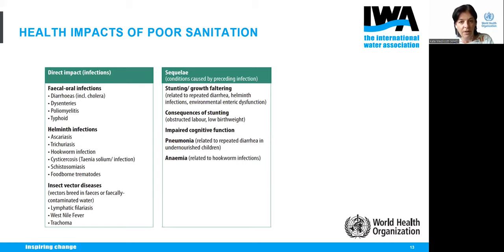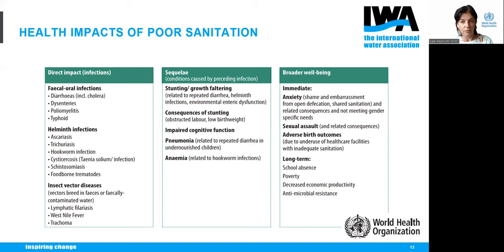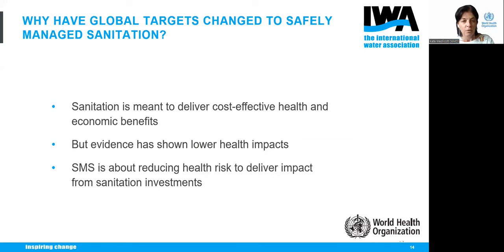The second category is consequences of those infections — things like stunting, impaired cognition, pneumonia, and anemia. And more broadly, as WHO defines health as not just the absence of disease but also broader wellbeing, we consider impacts on school attendance, anxiety, shame, and issues associated with privacy. With all these impacts in mind, how have we been doing?